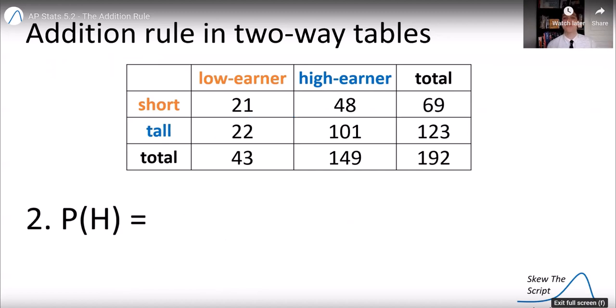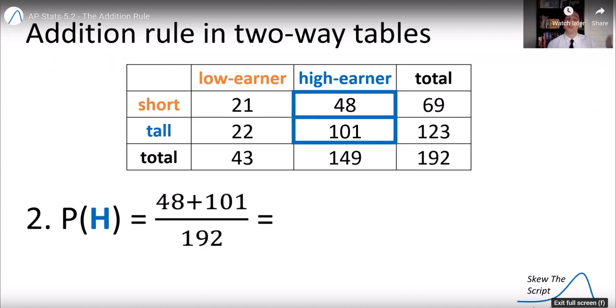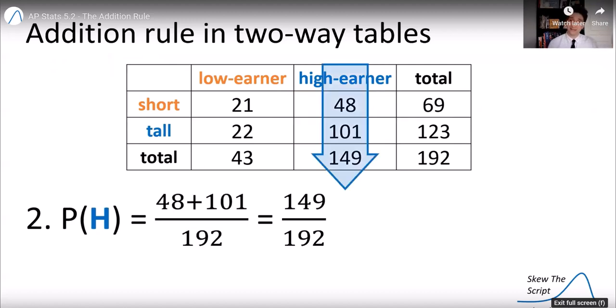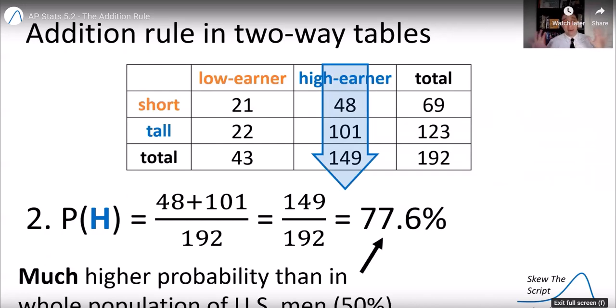The probability of selecting someone who is a high-income earner at random, we can add up the two high-income earner categories, divided by the total of 192, we get the percentage. We can also just get the column total, because the two-way table calculates that for us. We get 77.6%. Again, raised eyebrows, this is a much higher probability than we expect in the population of men in San Francisco, given that we're using the median, the 50th percentile.